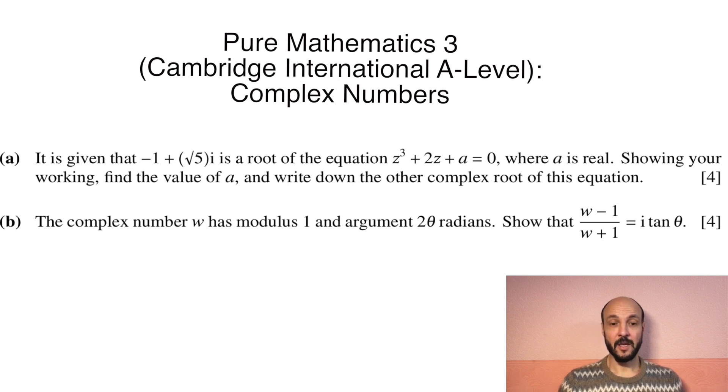Part (b): The complex number w has modulus 1 and argument 2θ radians. Show that (w-1)/(w+1) = i tan θ.